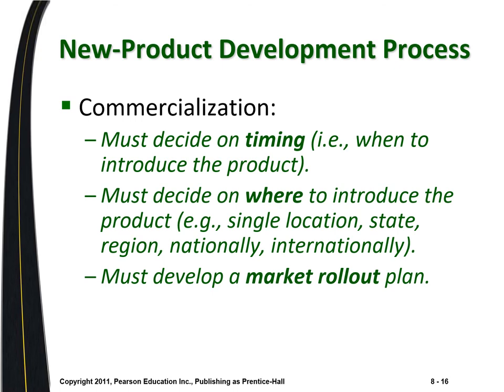Once you have a good product and you're sure about it, you commercialize it — deciding when to release it and how to introduce it. A great example is Apple, which has an announcement show every year where Tim Cook gets up dressed in a black turtleneck and introduces their new line of products, making it such an event that everyone tunes in to see what the new phone and tablet will look like. You might also release a product in one region of the country first, then try to expand from regional to national distribution.